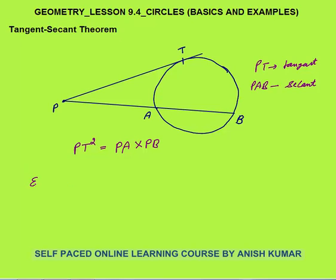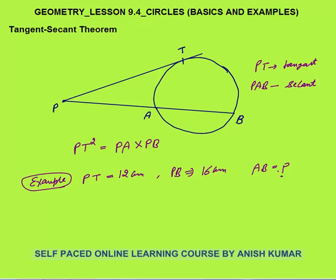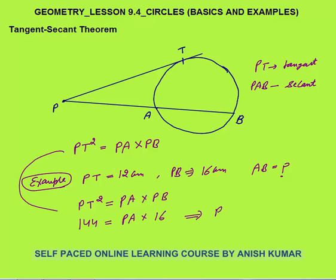For example, if PT is given as 12 cm and PB is given as 16 cm, can you calculate the length of AB? We know PT² = PA × PB, so 12² = 144 = PA × 16, which gives PA = 9. Since the complete length PB is 16 and PA is 9, AB must be 7 cm. That is your final answer.